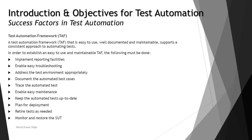Implement reporting facilities to capture results. Enable easy troubleshooting for the application, solutions, or test environment. Address the test environment appropriately, including configurations, operating system, and environment. Document the automation test cases. Trace the automated tests. Enable easy maintenance. Keep automated tests up to date. Plan for deployment when executing on the environment. Retire tests as needed — if any tests are no longer required or a component has been completely modified, remove them to avoid increasing execution time. Monitor and restore the SUT as a consistent ongoing process.